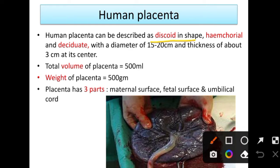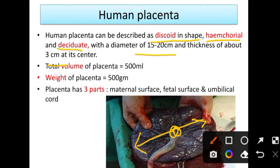Human placenta can be described as discoid in shape — we are discussing term placenta. It is hemochorial, meaning it lies in contact with the maternal blood, and deciduate, meaning it has to shed after delivery. These are the three main characteristics. It has a diameter of 15 to 20 centimeters, thickness of about 3 centimeters at its center, and weight of 500 grams.